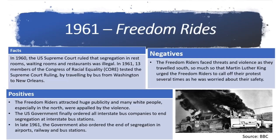Our next event is the Freedom Rides of 1961. In 1960, the U.S. Supreme Court ruled that segregation in restrooms, waiting rooms and restaurants was illegal. The group CORE tested this ruling by travelling by bus from Washington to New Orleans. They were met with great violence but this did help to attract huge publicity. This led to great progress with the end of segregation in airports, railways and bus stations.